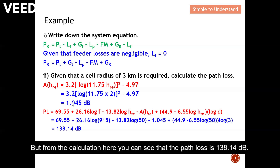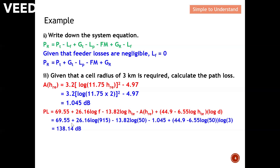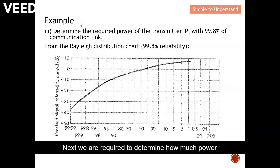From the calculation, the path loss is 138.14 dB. This is the path loss between the transmitter and receiver.